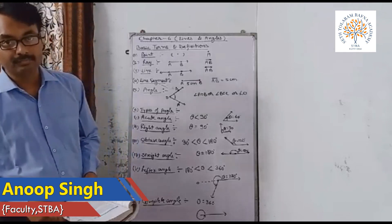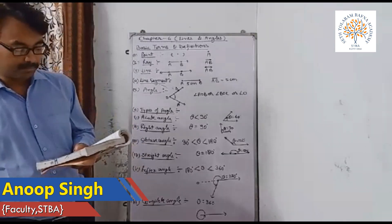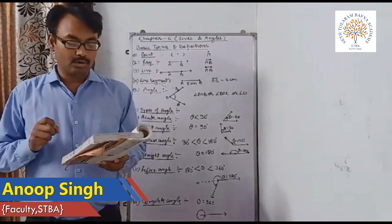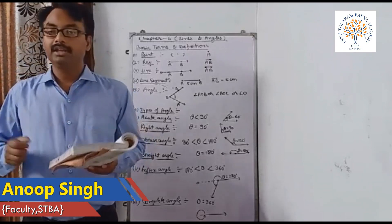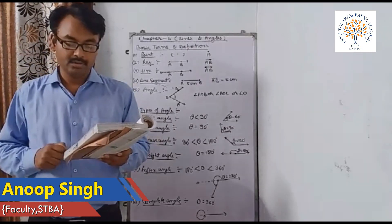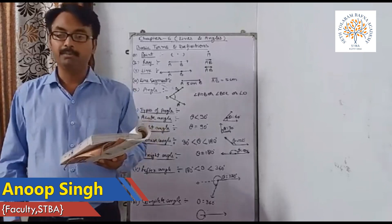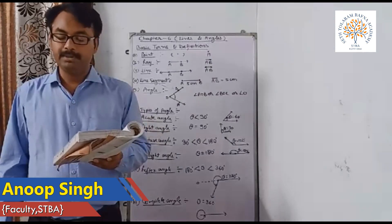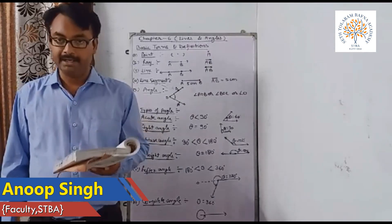You have studied that a minimum of two points are required to draw a line. In your daily life, you see different types of angles formed between the edges of plane surfaces. For making a similar kind of model using a plane surface, you need to have knowledge of angles.